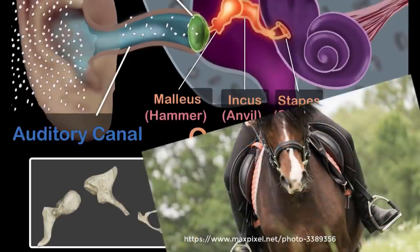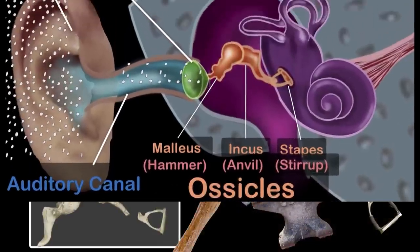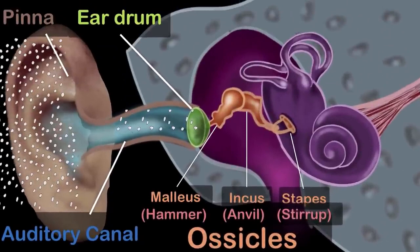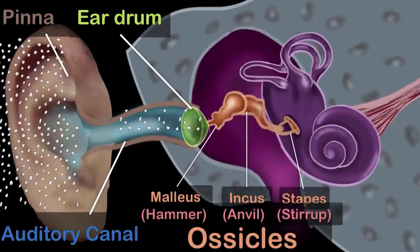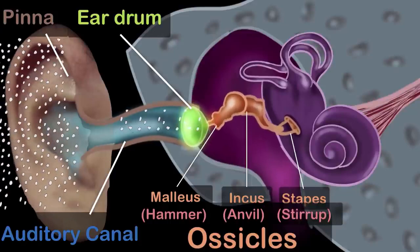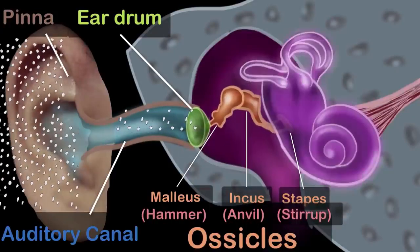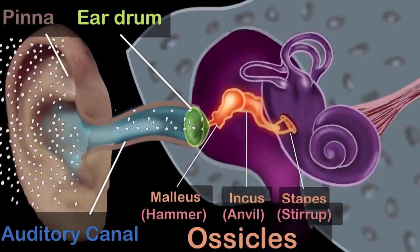Stirrup is where you rest your feet when you are riding your horse. As the eardrum vibrates, you can see the ossicles also start vibrating, transferring the vibrations from the eardrum to the inner ear. Their main job is to increase or amplify the pressure of the sound waves when it reaches the inner ear.